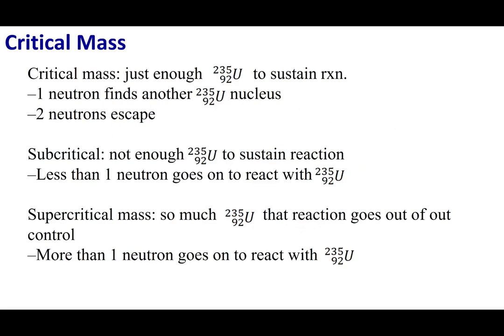What does that mean? If one of the three neutrons finds another uranium-235, then the reaction just continues forward. One of those three will find another uranium, generating three more neutrons, one of those three finds another uranium, and so on. If we have enough uranium-235 — what we call a critical mass — we can continue the reaction and it will go on indefinitely.